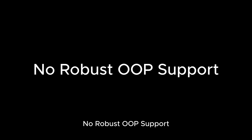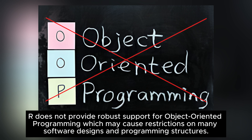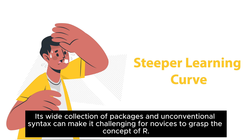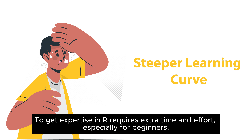No robust OOP support. R does not provide robust support for object-oriented programming, which may cause restrictions on many software designs and programming structures. Steeper learning curve: its wide collection of packages and unconventional syntax can make it challenging for novices to grasp R. To get expertise in R requires extra time and effort, especially for beginners.